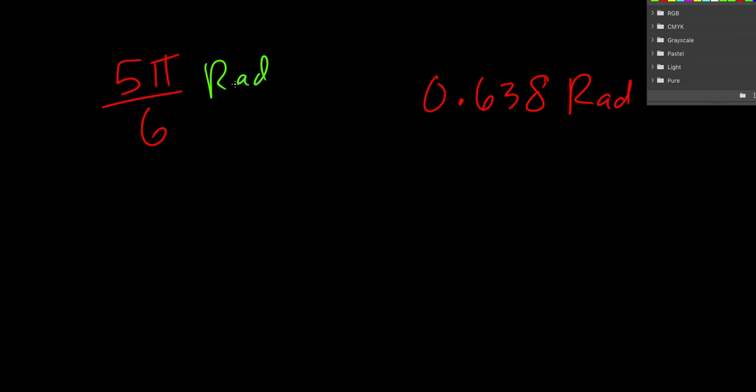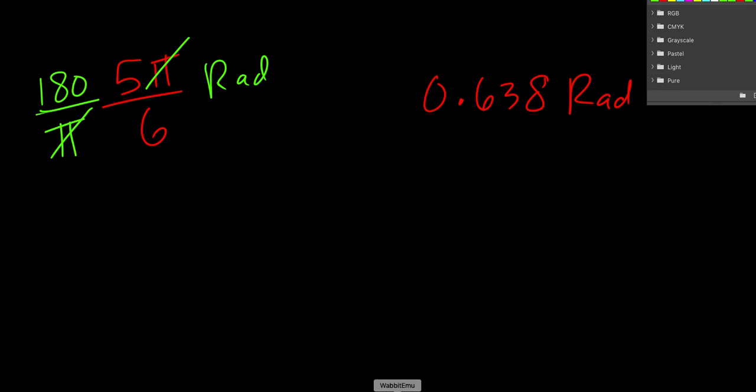And so I'm going to now multiply this by 180 over π. And one way that you can think about that is we have π on top, so we need π on the bottom to cancel it, because typically when we have degree measures we don't have π in our answer. And so cancel those, we do 180 times π divided by 6. So 180 times π divided by 6.